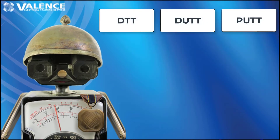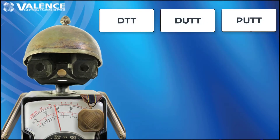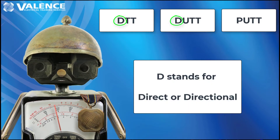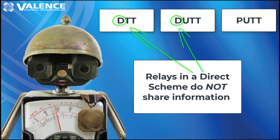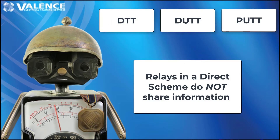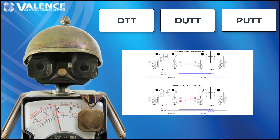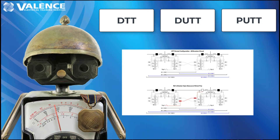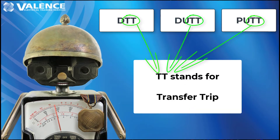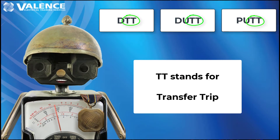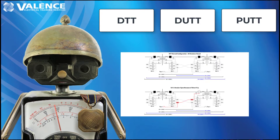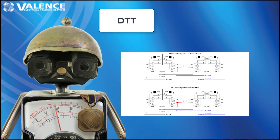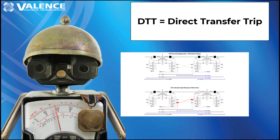These acronyms can be confusing, so let's break down the code to help you figure out what they mean. If the scheme starts with the letter D, the D can stand for direct or directional. Relays that do not share information back and forth are in a direct scheme — one relay simply tells the other relay to trip and the other relay follows the command. The TT at the end of the acronym stands for transfer trip, meaning that a remote relay is sending a trip signal to the other side. If I told you we were going to test a DTT scheme, you could translate the acronym to mean direct transfer trip.